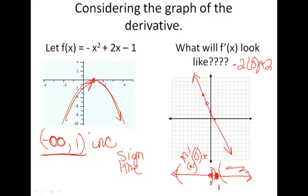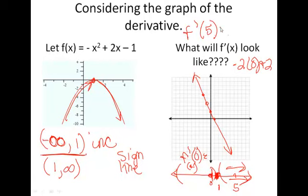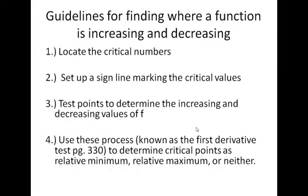From this interval outwards — from 1 to positive infinity — what's happening? Well, at that critical point we examine the other side and plug in a test point. I'm going to test 5. f prime of 5 — plugging into our derivative: negative 2 times 5 plus 2 — we get negative 8. It doesn't even matter what the value is so much as that it's negative. This is a negative derivative, so therefore this is a decreasing interval. We're going to be using that first derivative and creating the sign line to help us determine the increasing and decreasing values of our function, plus more.